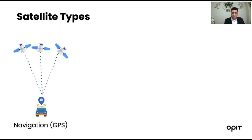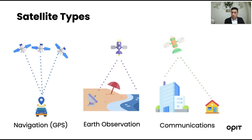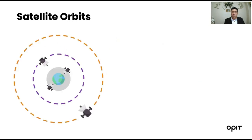When we talk about satellite types, we have different types. We started with navigation satellites, commonly known as GPS. We also have observation satellites used for weather and atmosphere monitoring, and the third kind is communication satellites, used to transmit and receive video services, for example.